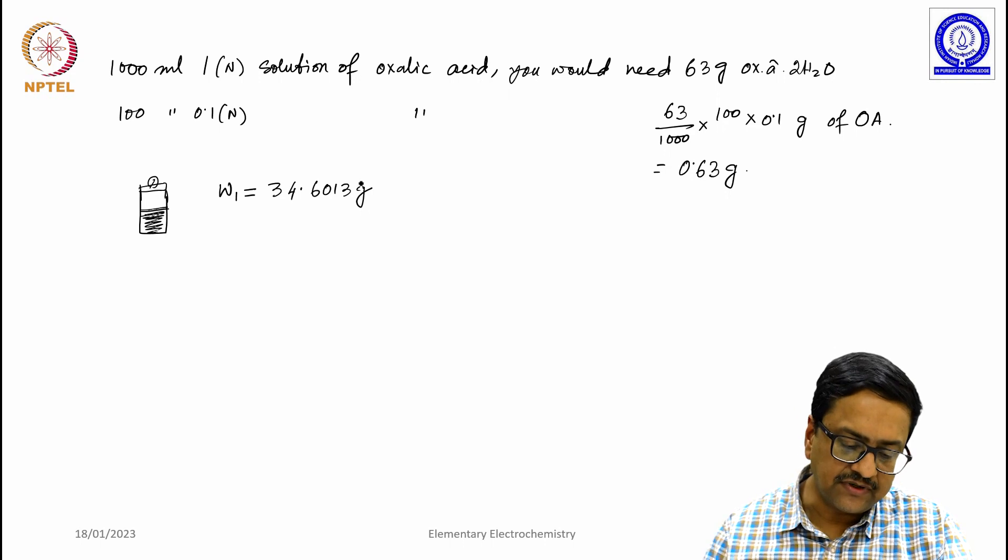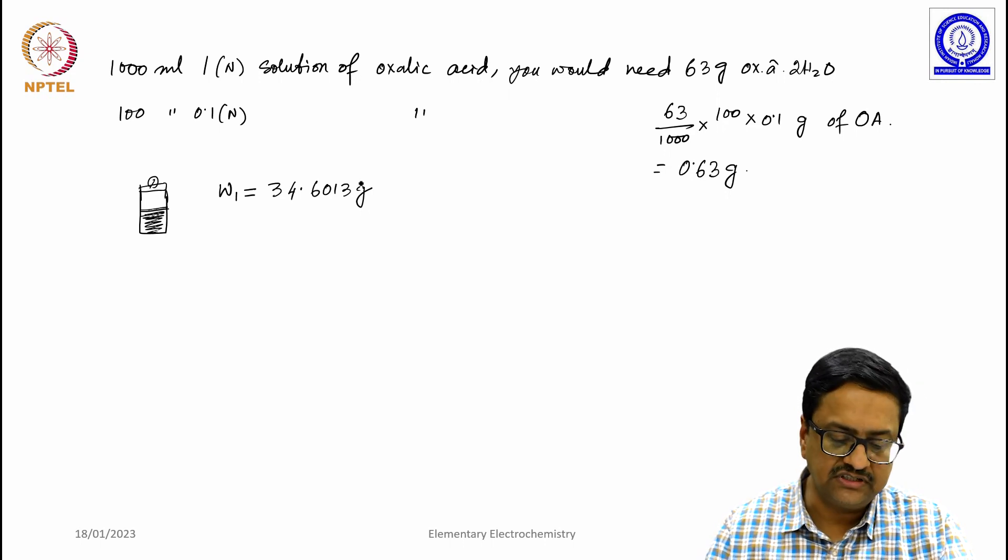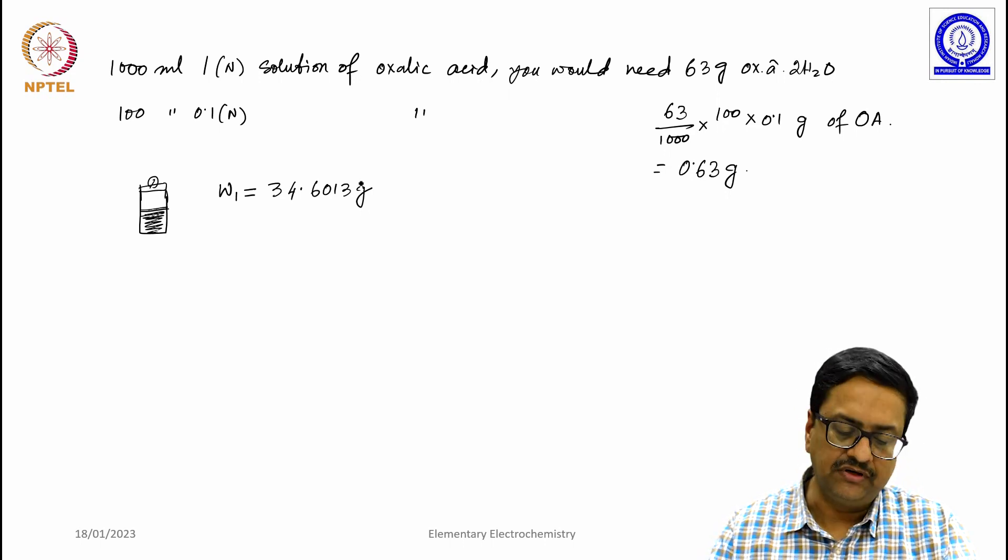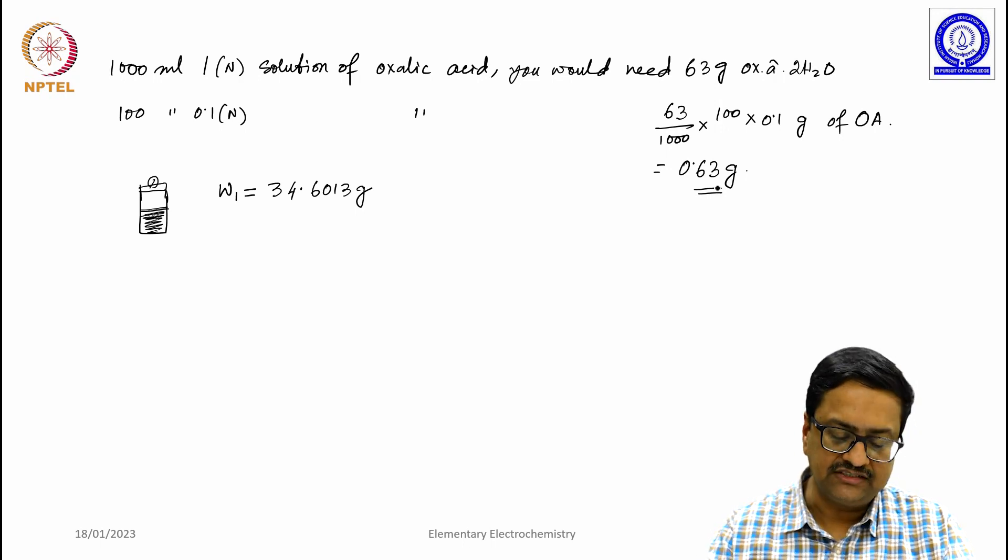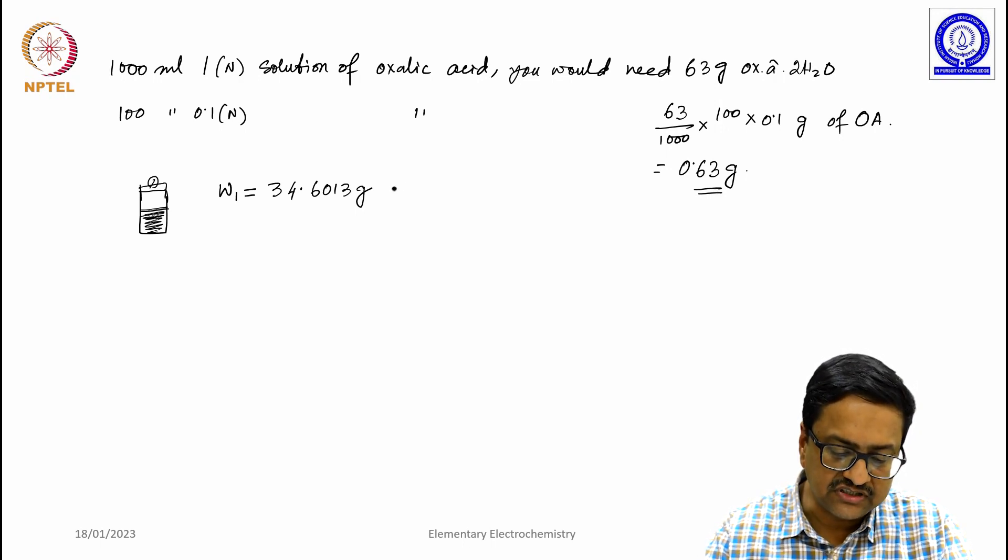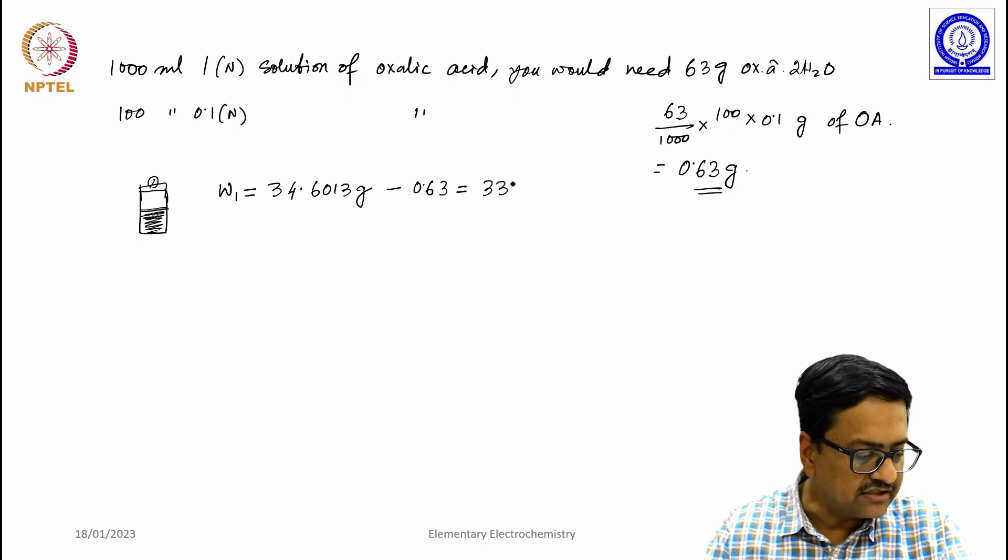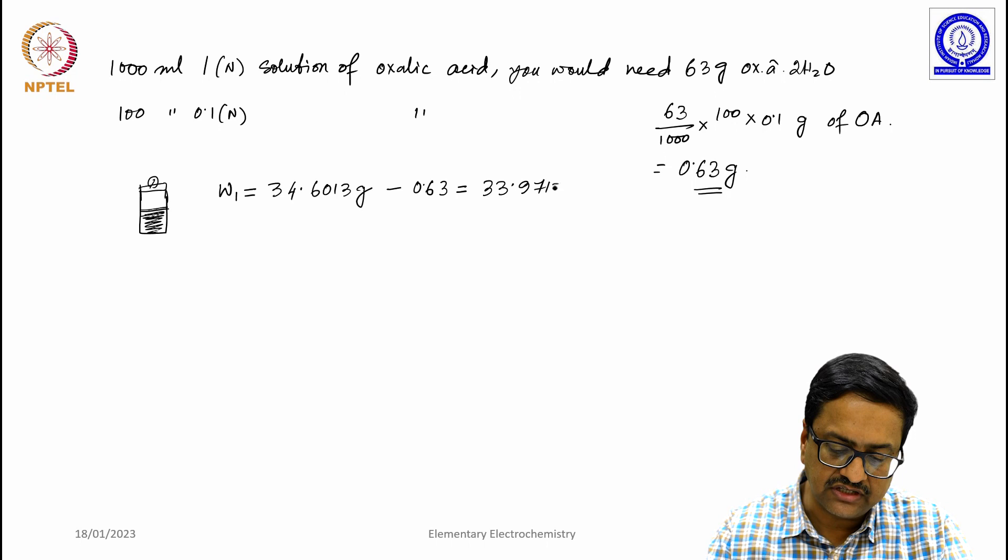Then we carefully transferred certain amount of oxalic acid to the volumetric flask, did it 2 to 3 times, till it reached a value which is close to 0.63 gram by subtraction. So what we did is we simply subtracted 0.63 from that number and we were trying to achieve a number 33.9713 gram.